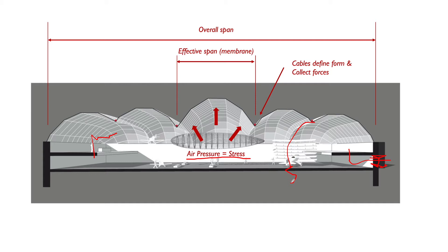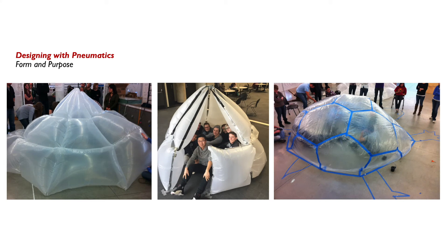Once you understand the general components of a pneumatic system, you can see there's a kit of parts to use. Designing with pneumatics means understanding the form and purpose of what you're doing. There are essentially two different kinds: one is inflating the space itself with an air-supported system — students at Iowa State have constructed these prototypes using a fan to keep it up — or by inflating different pockets in the skin, which holds tension, keeps the structure stiff, and can be stacked and arranged in different ways to support itself. Pneumatics are energy intensive but are inherently safe, as they collapse slowly.